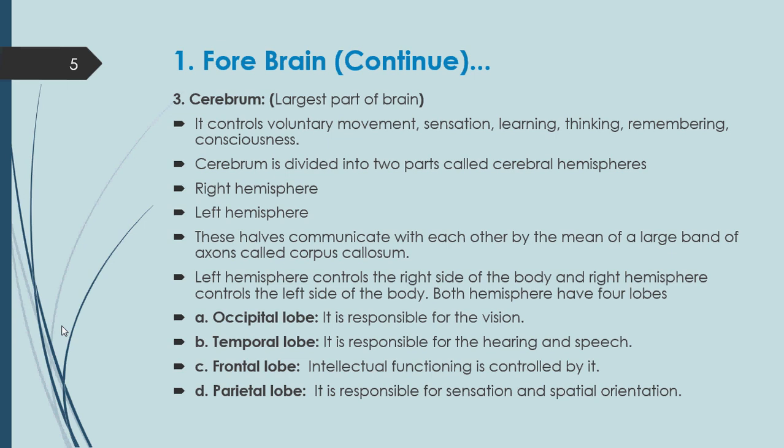These two halves communicate with each other by means of a large band of axons called the corpus callosum. The left hemisphere controls the right side of the body. So if you see a person who is paralyzed on his right side of the body, it is the right hemisphere that controls the left part of the body.